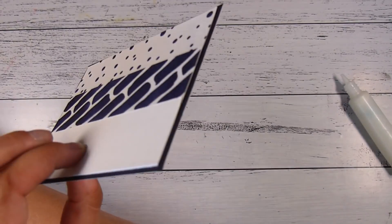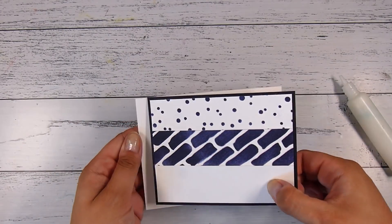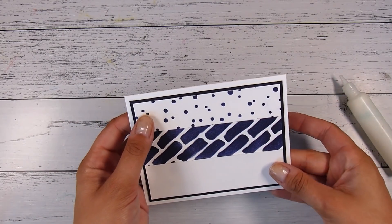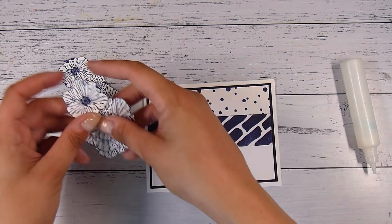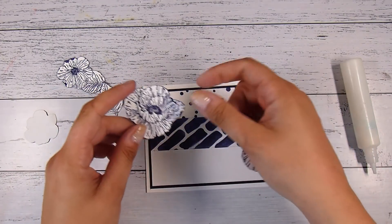I'm using some matte medium - that is the Ranger Multi-Medium in the matte finish. It's a really strong glue and I know that it's going to dry completely clear. If any smushes outside then I don't have to worry about it at all.